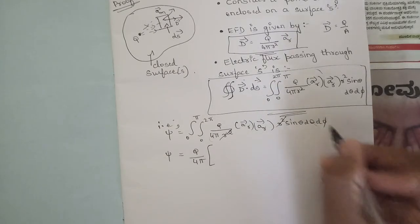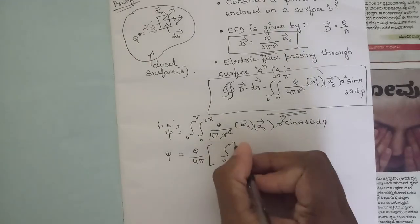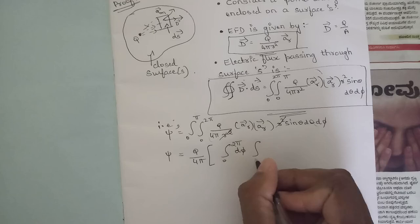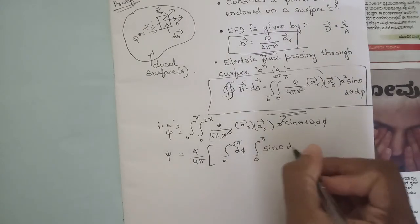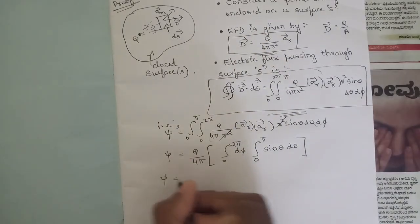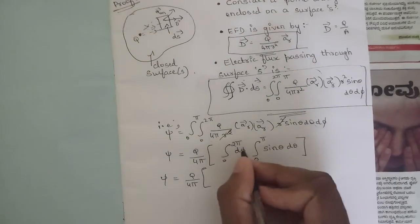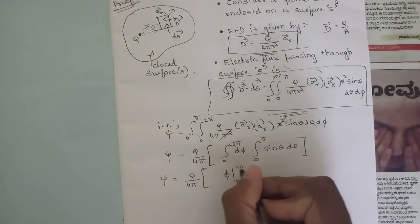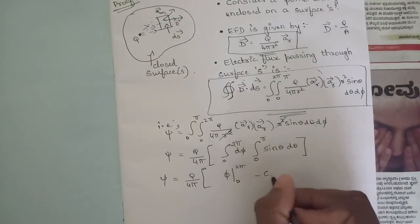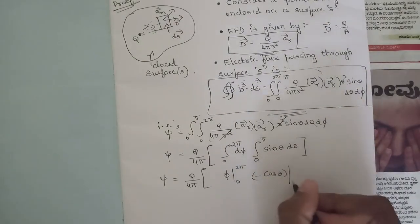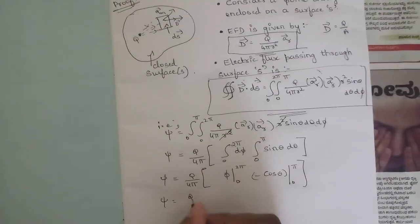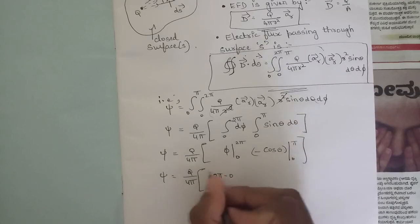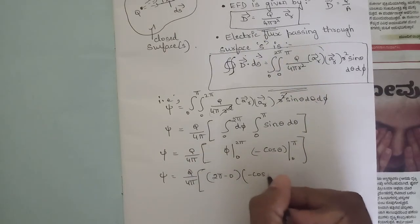Simplifying further, taking Q over 4π as a constant outside the integral, with ar dot ar equal to 1, the remaining terms are sinθ dθ and dφ. Integrating separately: the integral of dφ from 0 to 2π, and the integral of sinθ dθ from 0 to π. This gives Q over 4π times [φ from 0 to 2π] times [−cosθ from 0 to π].